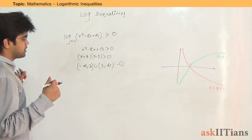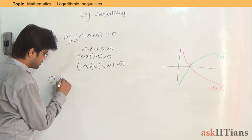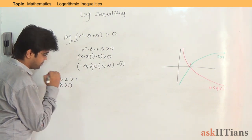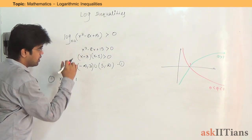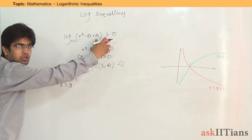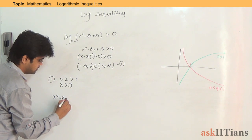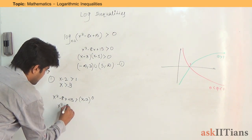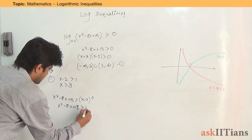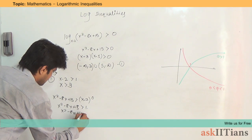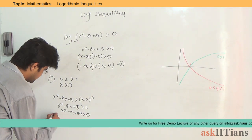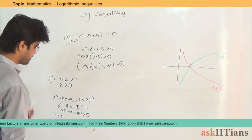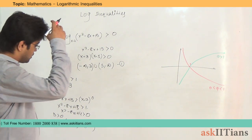The second condition splits into two cases. Case 1: base (x - 2) is greater than 1, meaning x must be greater than 3. In this case the inequality sign does not change after taking the anti-log, so x² - 8x + 15 must be greater than (x - 2)⁰, i.e., greater than 1. This gives x² - 8x + 14 > 0, whose discriminant is positive, so there are two roots giving the interval (−∞, α) ∪ (β, ∞).